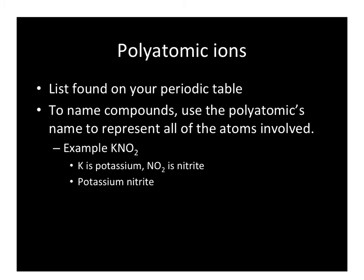Polyatomic ions are treated just like any other ion, except they are a grouping of atoms — polyatomic literally means many atoms. For example, potassium and nitrite: potassium has one valence electron, and nitrite has a minus 1 charge, so it acts similarly to fluorine, chlorine, bromine, or iodine. The whole grouping acts as if it has seven valence electrons wanting that one electron from potassium, so the formula is simply potassium nitrite.